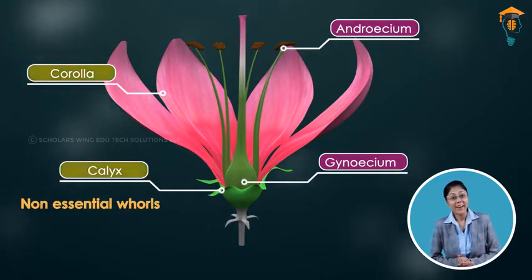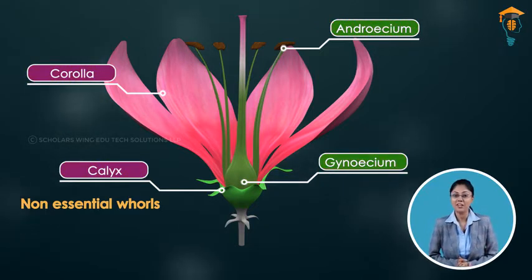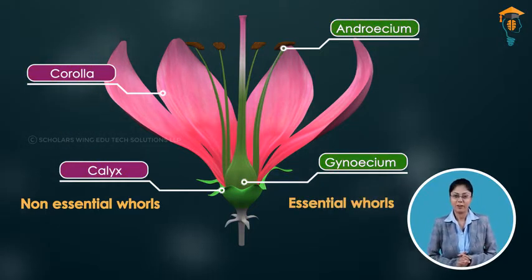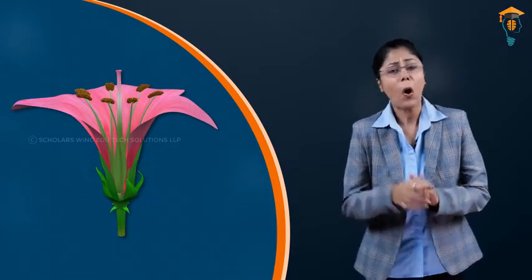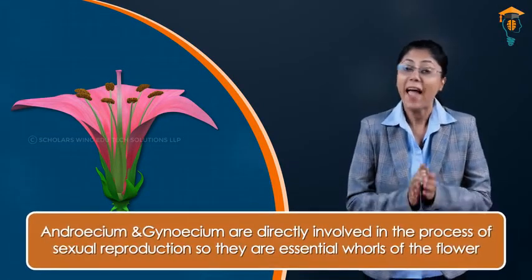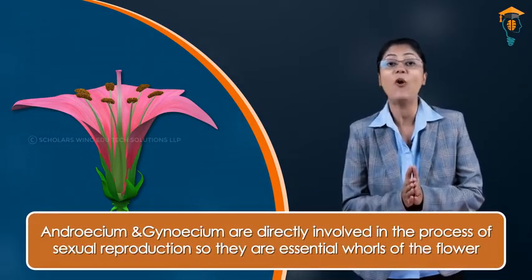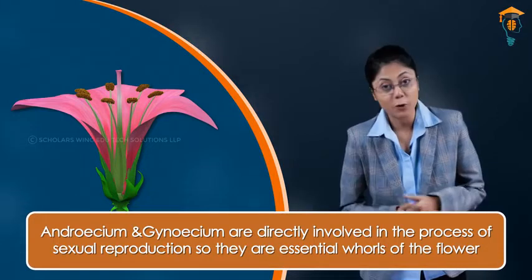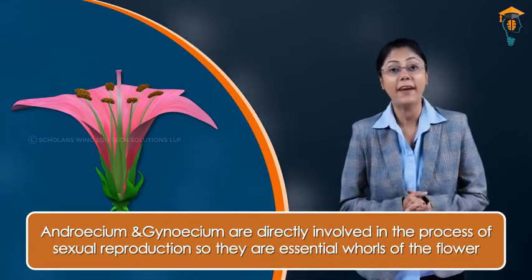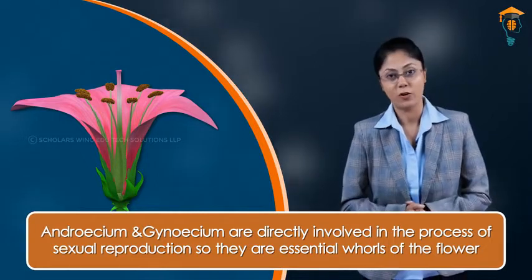The calyx and the corolla are called the non-essential whorls of the flower, whereas the androecium and the gynoecium are called the essential whorls. The calyx and corolla are non-essential because they are not directly involved in sexual reproduction. On the other hand, the androecium and gynoecium are directly involved in sexual reproduction and are therefore called the essential whorls. Now let us discuss the non-essential whorls of the flower.